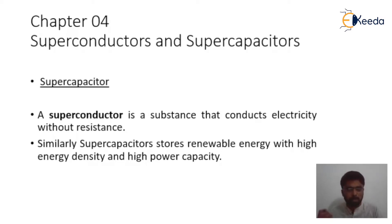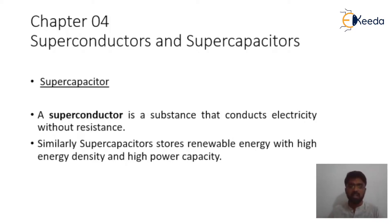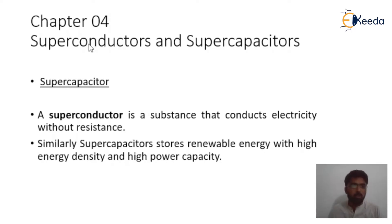In a 40-kilometer marathon, what is required is stamina and continuity. But in a 400-meter race, we require high energy density and high power capacity — like Usain Bolt, like a superman. We are going to discuss this in this lecture, so let us start with capacitance.